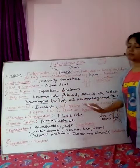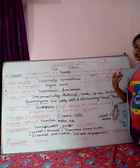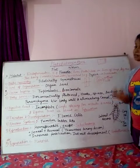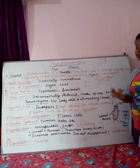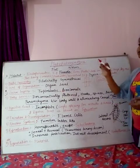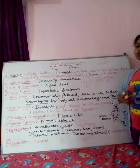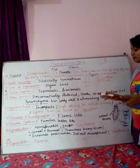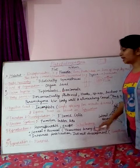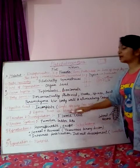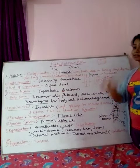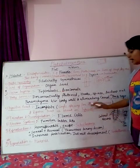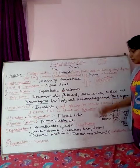The digestive tract is incomplete — there is only a single opening that serves as both the mouth and the anus. This single opening performs both functions, making it an incomplete type. The digestive tract is completely absent in the tapeworm, and you should remember this fact.